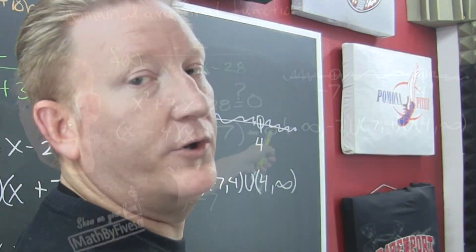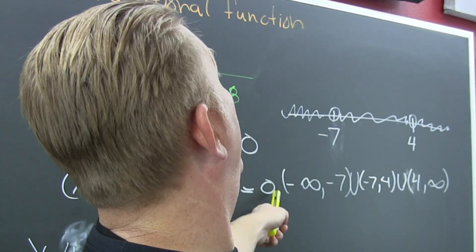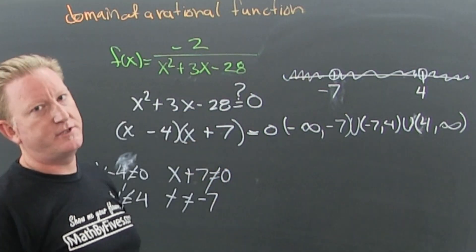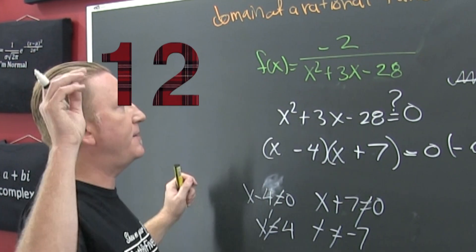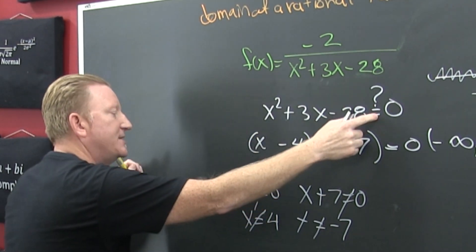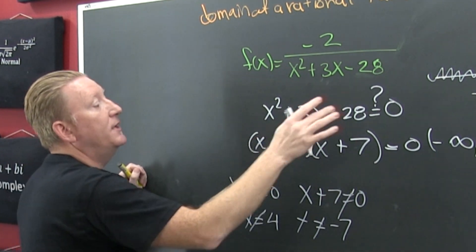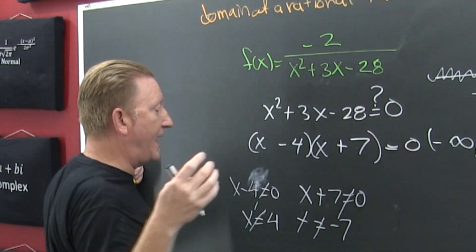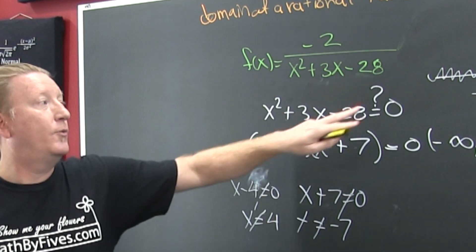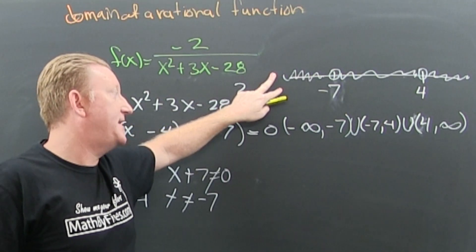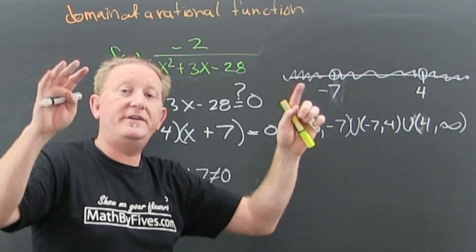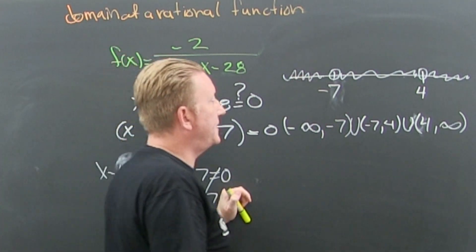So if we're looking for the domain of a rational function — that's the quotient of two functions — you can never divide by zero. So you take that denominator, set it equal to zero, then solve it by setting each one of those factors equal to zero. And when you're writing in interval notation, the parts that are not included have the curvy brackets. I think that's just about it.